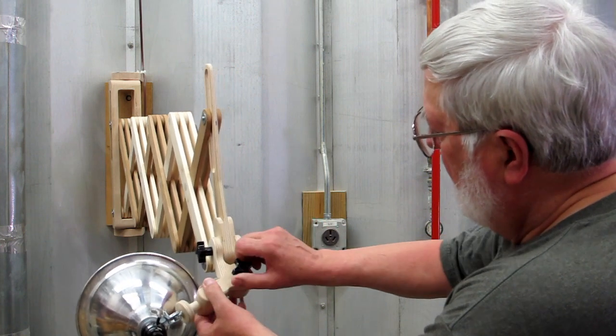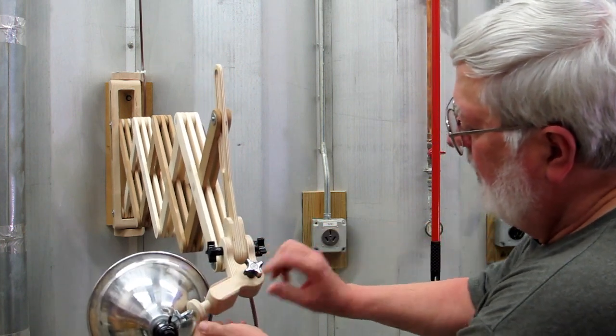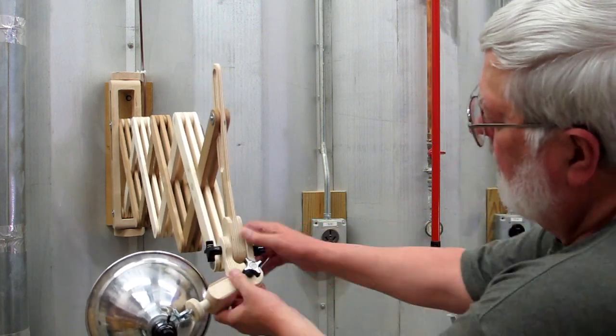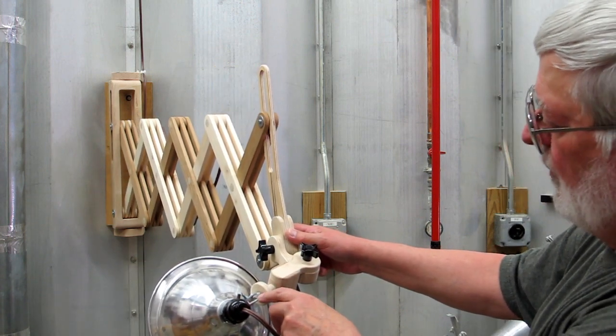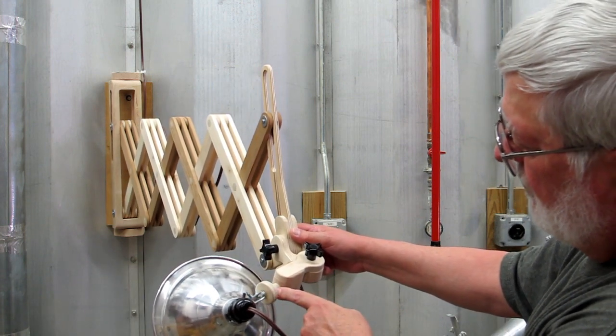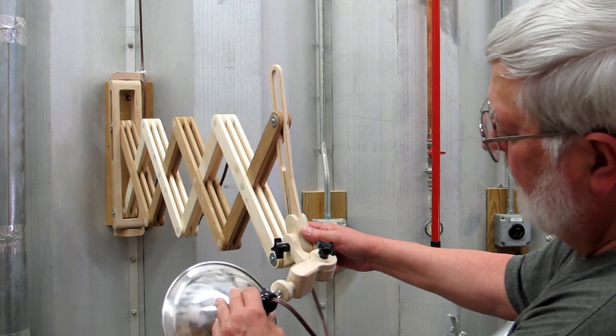You have adjustments for up and down, swing it that way. This piece will rotate in here and I took the fitting that came with the light and glued it in the end of this wooden dowel so this light is still adjustable.